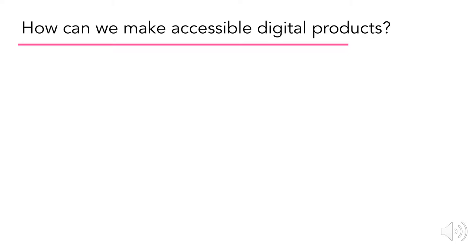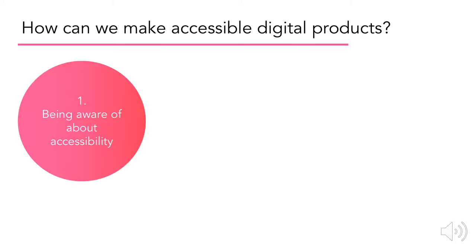How can we make accessible digital products? First, we have to be aware of the issue of accessibility and understand that approximately 20% of the population has some sort of impairment. This also includes making sure that no product is released that is not accessible and making accessibility a requirement of all products from the beginning.